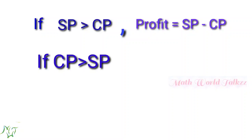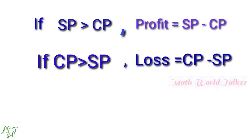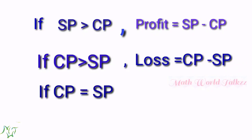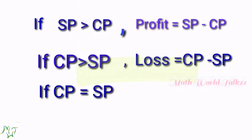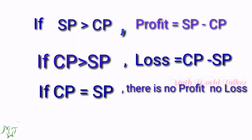What happens if CP is greater than SP? There will be a loss. So, loss is equal to CP minus SP. What about when CP is equal to SP? If a merchant sells an item for the same price he bought, there is no profit and no loss for that merchant.